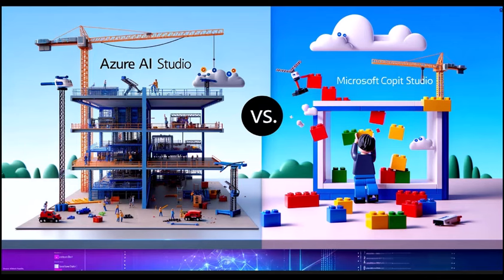So what is the main takeaway here? Azure AI Studio is your all-in-one AI infrastructure service for building AI solutions from scratch. On the other hand, Co-Pilot Studio is your low-code AI tool for quick and easy AI solution development using external or existing data sources.